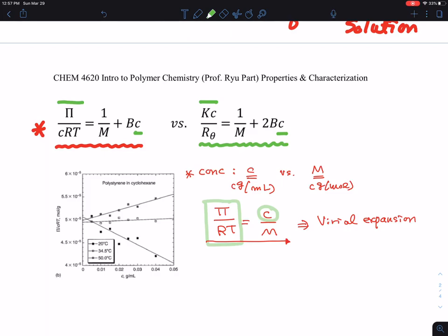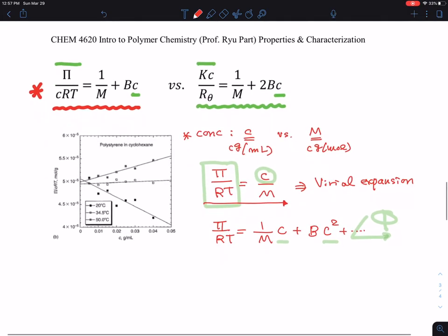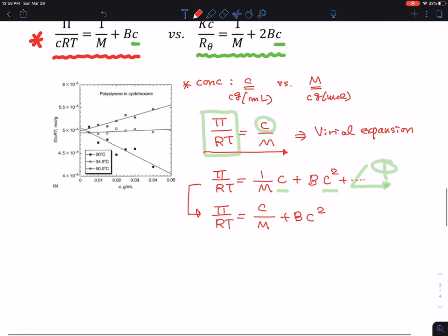So π/RT = (1/M)C + BC². I'm going to have a second order inclusion and so on. This is a polynomial expansion of first order, second order, and multiple orders. I'm going to neglect higher terms. If I rearrange this equation, π/CRT is (1/M) + BC, and this is the final form of the osmotic pressure equation.